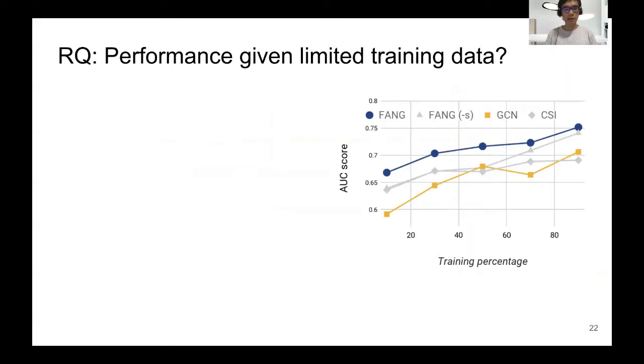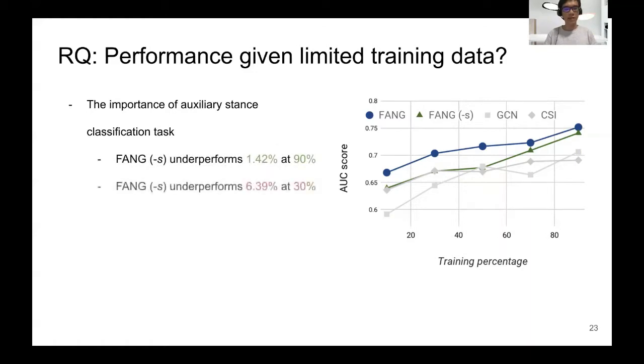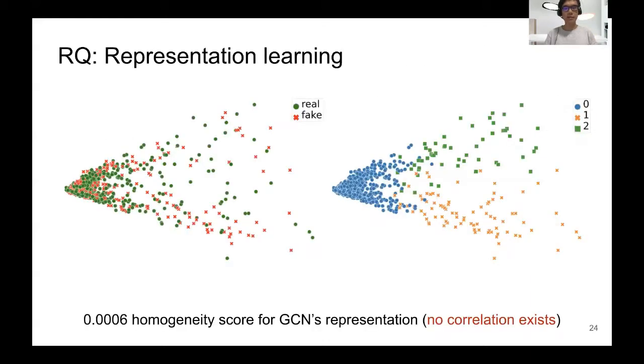We're also interested in model performance given limited training data. So we plot the AUC score against the training percentage. And we observe that FANG outperforms the baseline for all training portions. From 90% training data to 10% training data, GCN AUC drops by 16.22%, whereas FANG AUC score only drops by 11.11%. So we have FANG-S, which is the stance-ablated baseline for FANG. And we can see that the underperforming margin between FANG-S and FANG increases as the training percentage decreases. This indicates the importance of stance classification auxiliary task.